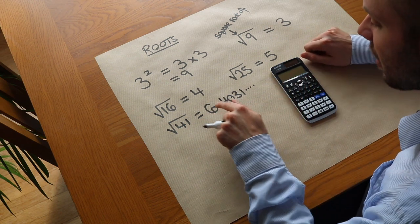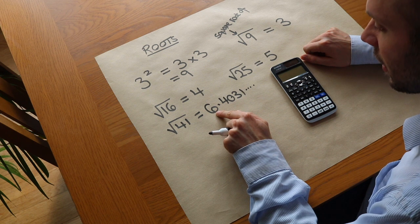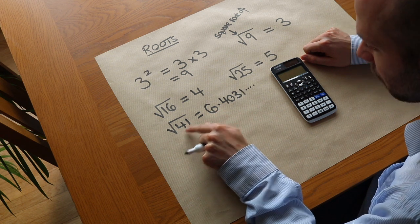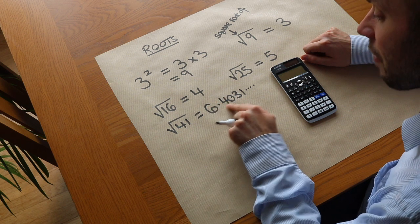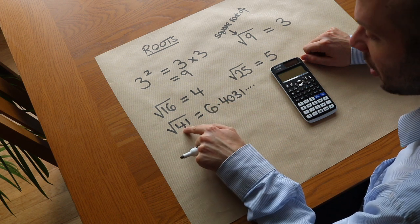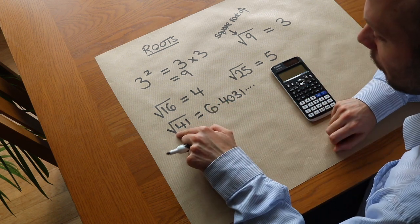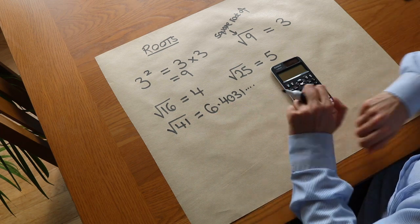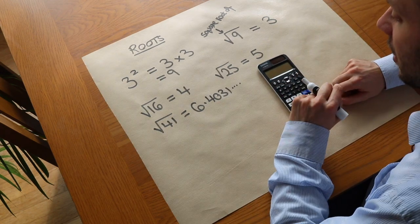That sort of makes sense because we know that 6 squared gives you 36, which is lower than 41. But 7 squared would give you 49, which is more than this. So we know the square root of 41 must lie somewhere between 6 and 7, even without a calculator.